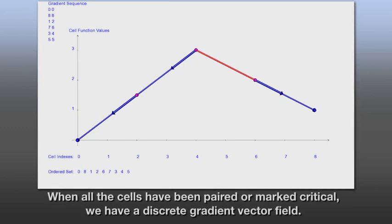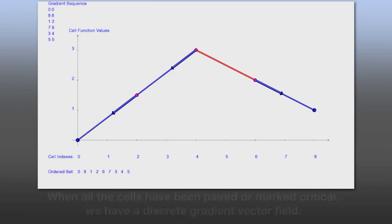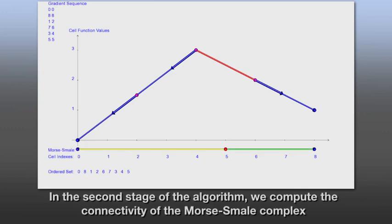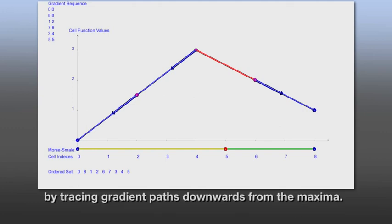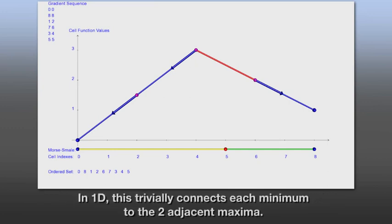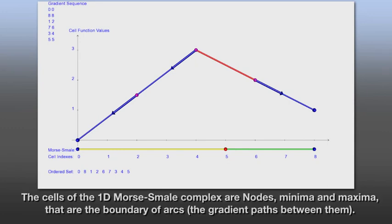When all the cells have been paired or marked critical, we have a discrete gradient vector field. In the second stage of the algorithm, we compute the connectivity of the Morse-Smale complex by tracing gradient paths downwards from the maxima. In 1D, this trivially connects each minimum to the two adjacent maxima. The cells of the 1D Morse-Smale complex are nodes, minima and maxima, that are the boundary of the arcs, the gradient paths between them.